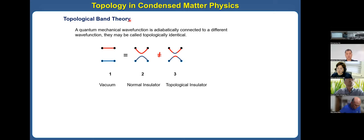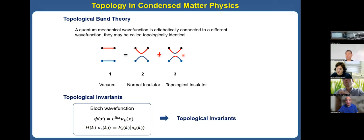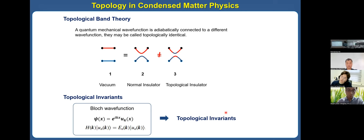From the viewpoint of topological band theory, we can easily understand the topological properties of electronic bands. For example, the first and second bands can be deformed continuously, so they are in the same topological class — we call it a normal insulator. But for the second and third band structures, they cannot be deformed continuously, so the third one is called a topological insulator. We can define a topological invariant using the Bloch wave function, which characterizes the properties of topological materials.